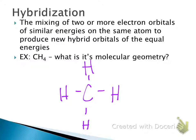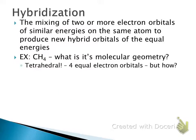We're talking about hybridization, which is the combination of two or more orbitals that combine to make a new orbital. Looking at CH4: what's the molecular geometry? Tetrahedral. That means each hydrogen is oriented around the carbon about 109.5 degrees apart — the farthest apart they can sit given the repulsion of those electron pockets. So CH4 has tetrahedral geometry, which means it has four equal electron orbitals.